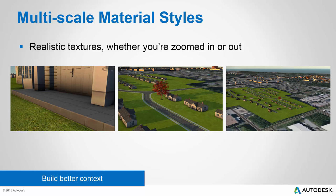Multi-scale material styles are an exciting new feature of this summer 2015 update. These allow you to have realistic textures, whether you're zoomed way in or way out in the model. In the image on the left, I've zoomed way in to the doorstep of the home, and you can see how realistic the grass texture looks. In the middle image, I've zoomed out so that I can see several homes, and it still looks good — it doesn't look tiled or computer generated. And in the image on the right, I'm zoomed out even further where I can see the entire project and the context beyond it, and still the grass texture looks very realistic. This is just one way we're enabling you to build better context so that the model looks good no matter what area you're looking at, how far you're zoomed in, or how far you're zoomed out.